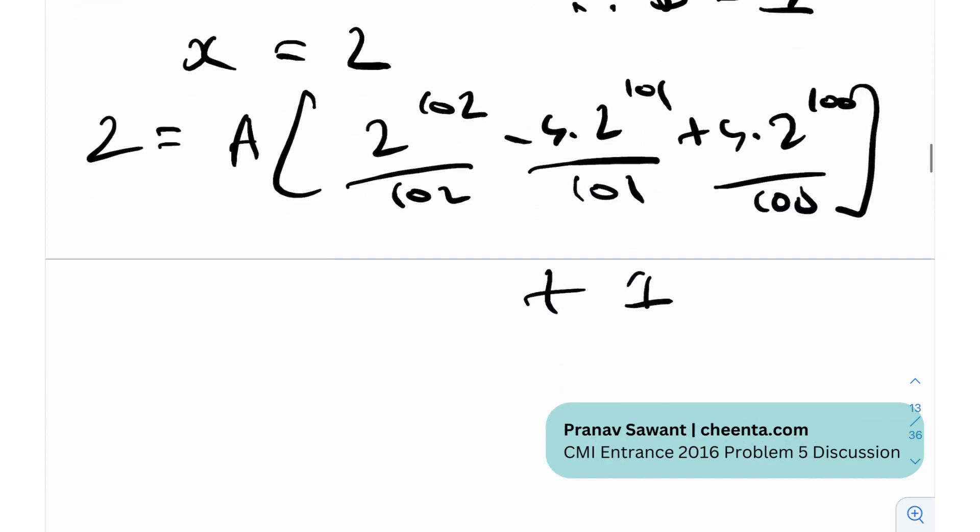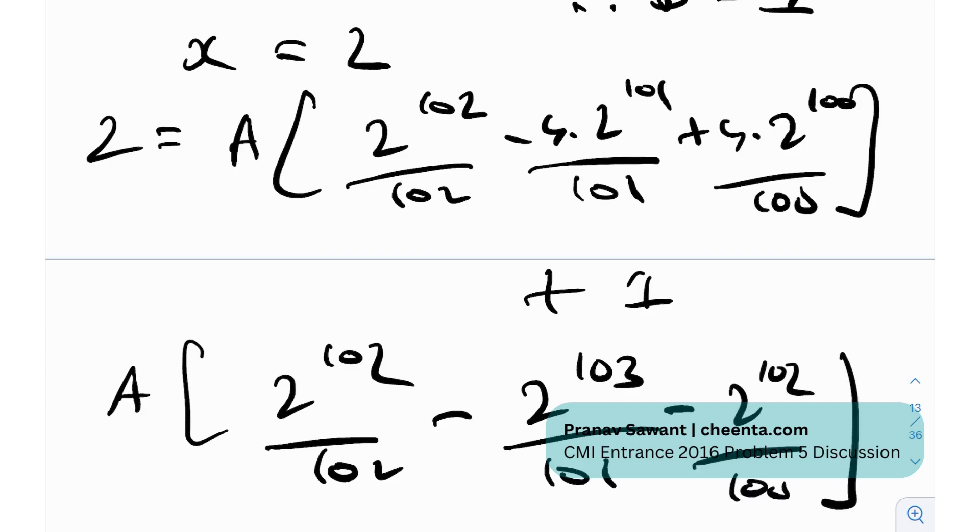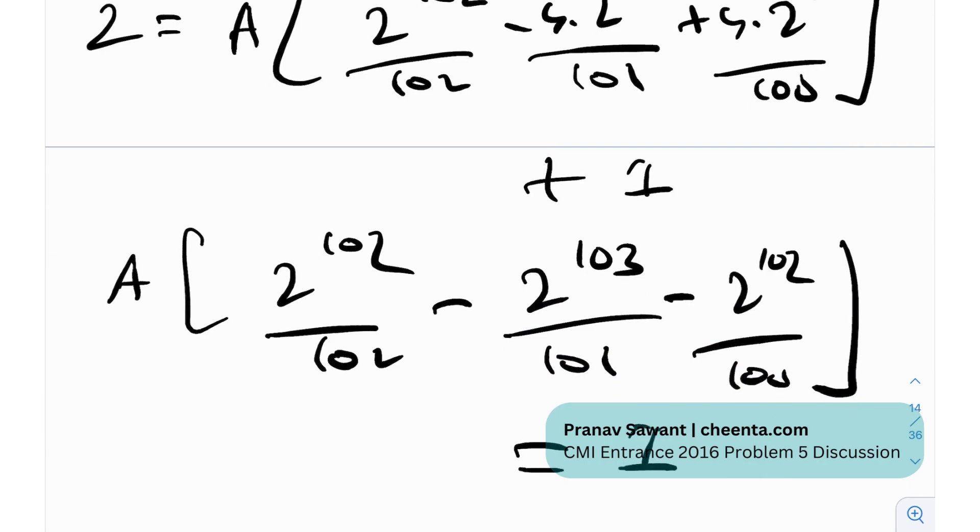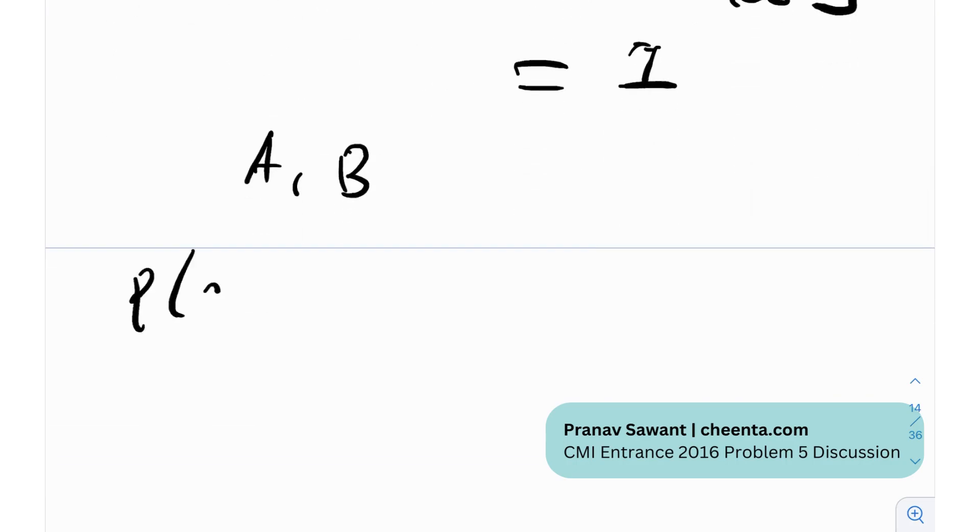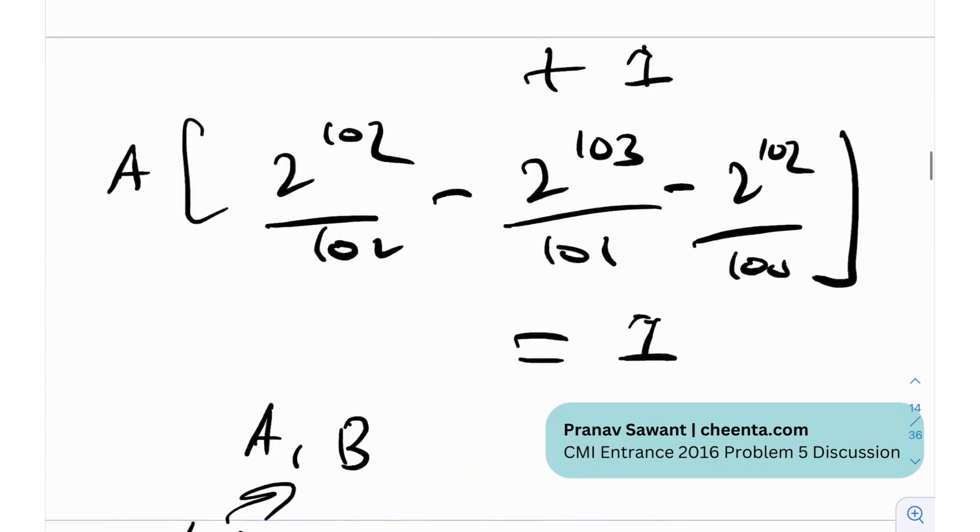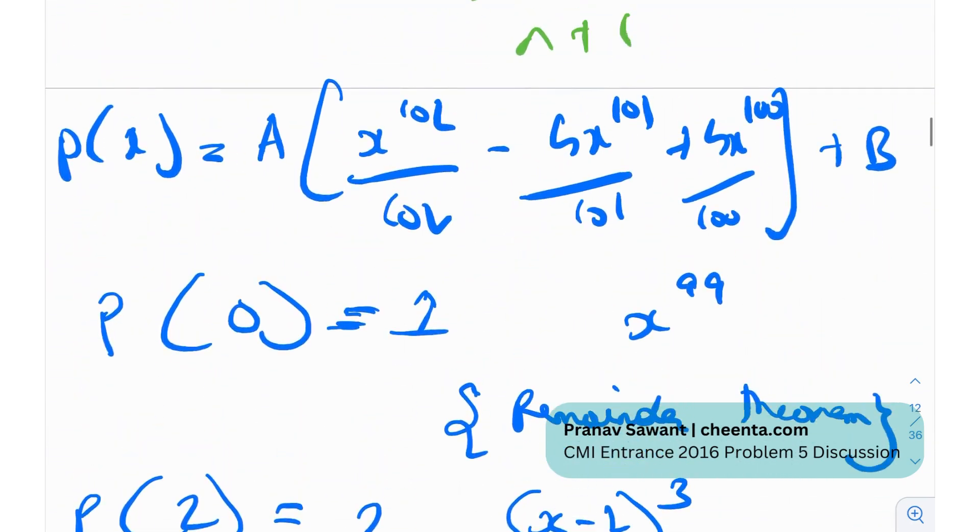We can essentially find out the value of a very easily so a times this entire quantity 2 to the 102 by 102 minus 2 raised to 103 by 101 minus 2 raised to 102 by 100 is nothing but 1 and then you can really find out the value of a you can simplify it if you want but really even if you leave it in this format it should be perfectly fine so a and b constants that we actually determine b is 1 and a is this rough looking expression but yeah so that was essentially the value of p of x right once you found a and b you just plug it back into the equation of p of x that we found over here.